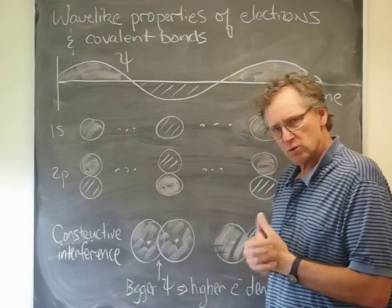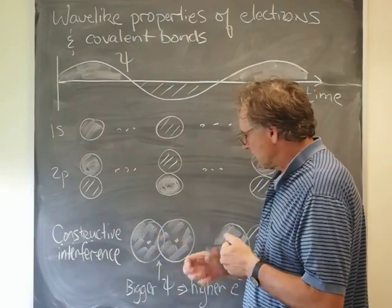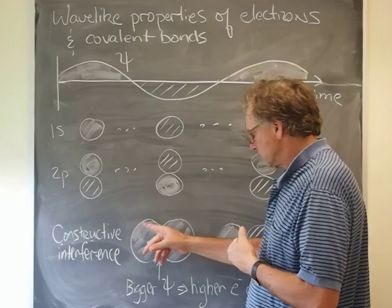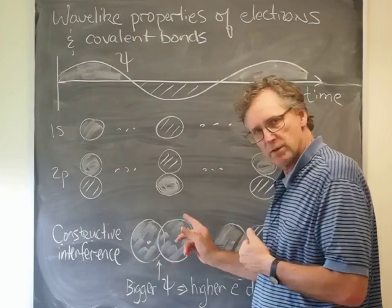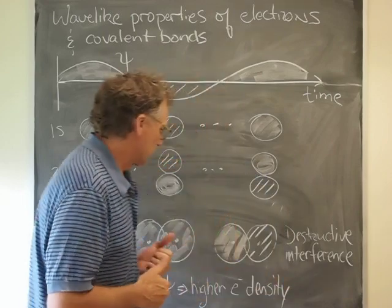So there's one more little piece of the story. You can imagine that there could be constructive interference when the orbitals are in phase with each other, the orbitals from the two different atoms. What happens when those orbitals are out of phase?